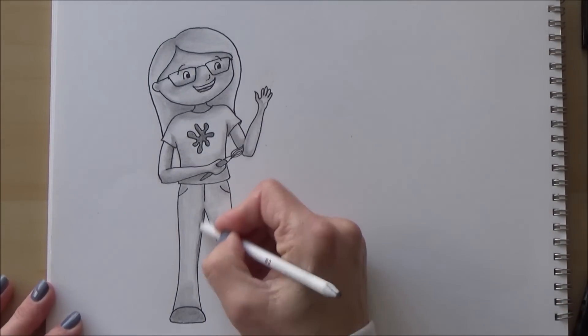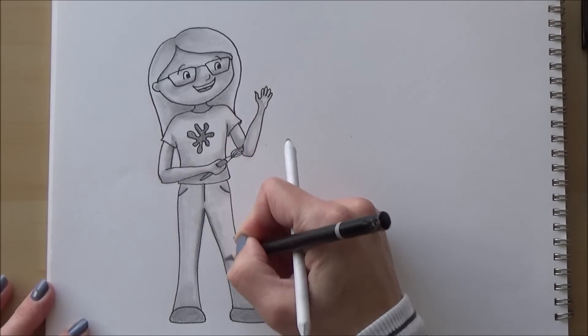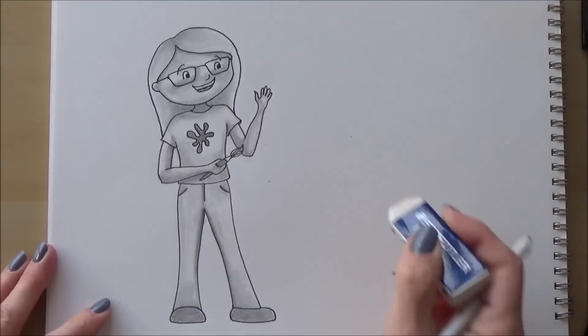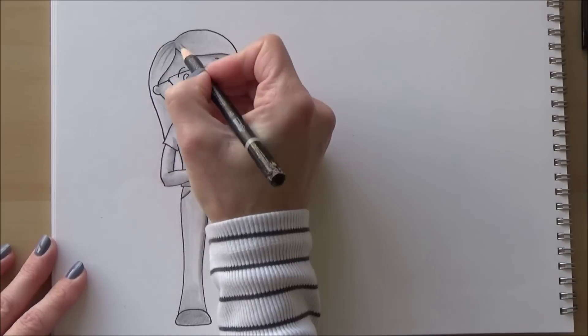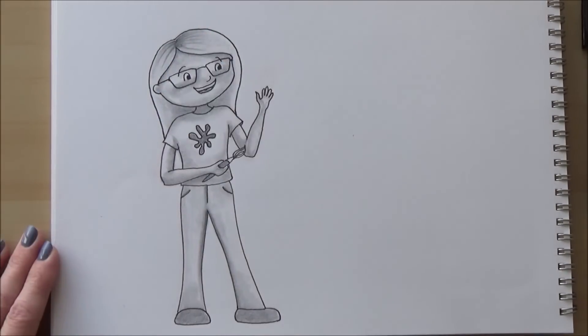Then it was just a case of adding another layer of pencil to those darker areas, adding a few details to my hair, and pulling out a few highlights on my glasses with an eraser. And this Art Cadet's avatar was complete. Now I know it's not perfect, but I did have a lot of fun drawing it, and I hope you enjoyed the video.